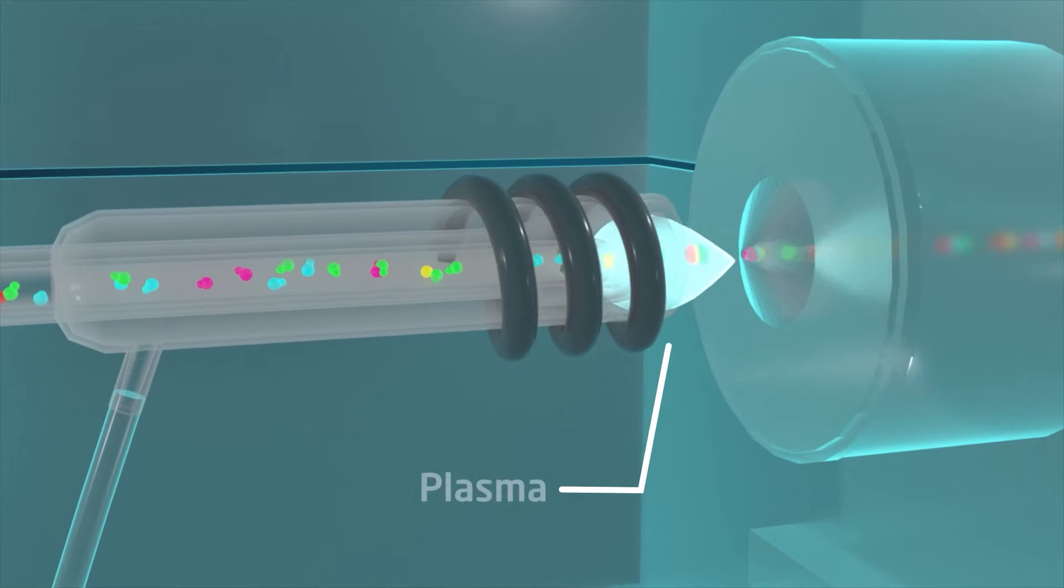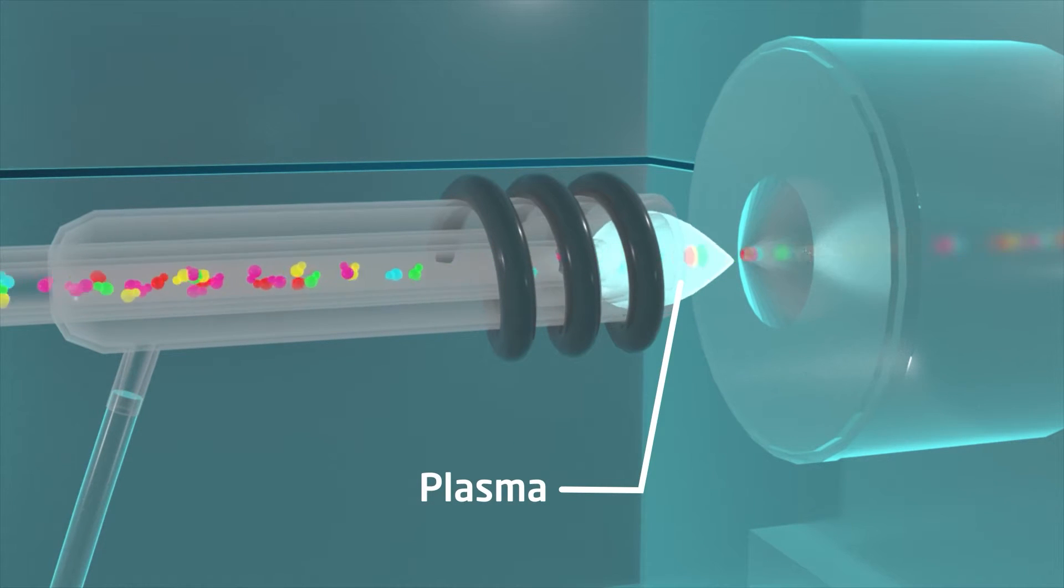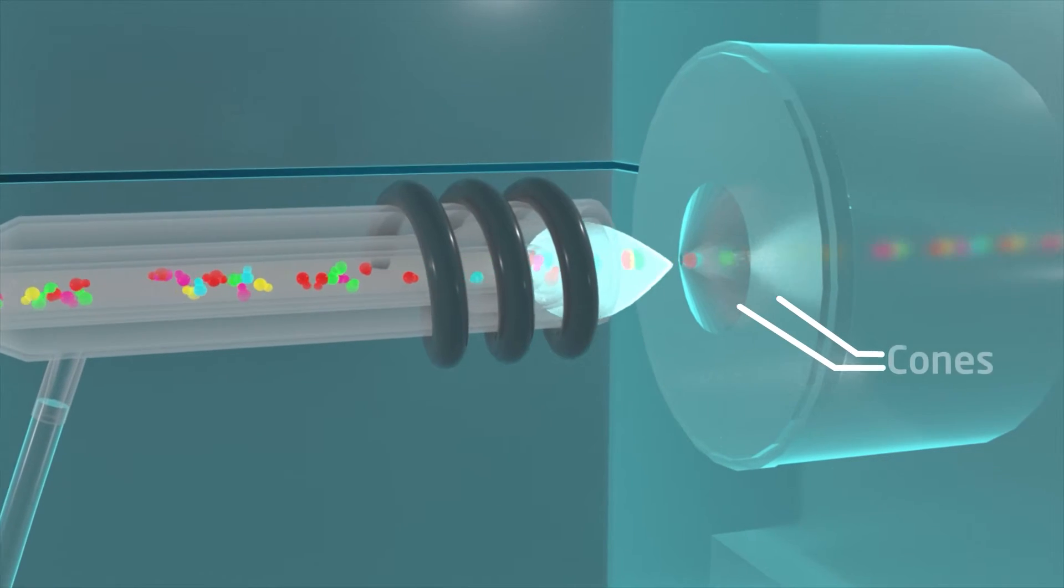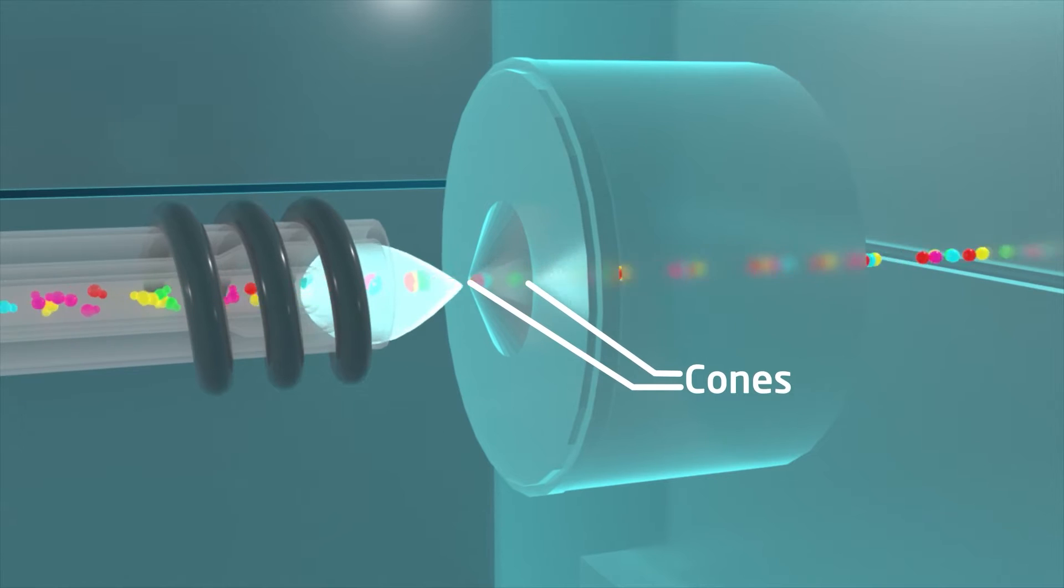The sample then passes the plasma, which breaks down compounds and strips off electrons from the atoms. Then it passes through a set of cones that mark the transition to an increasing vacuum.